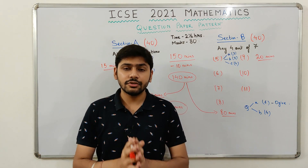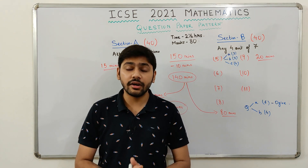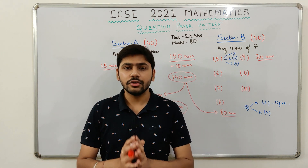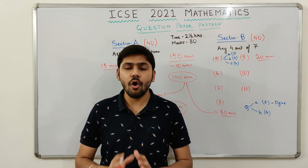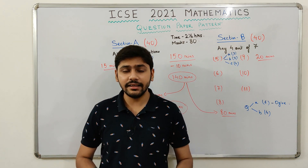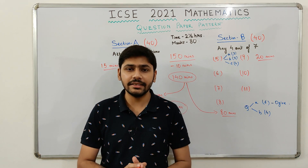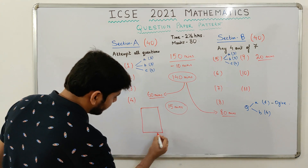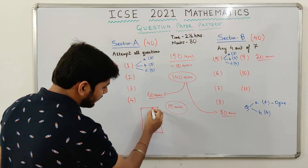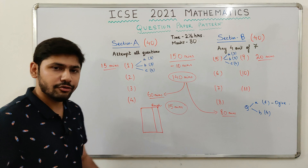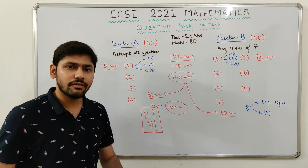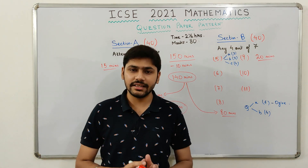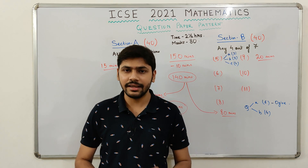The next tip: show all working steps clearly and do rough work on the same page as the sum. In ICSE Mathematics, you get step marking, so showing all working steps is compulsory. For rough work, draw a line on the right-hand margin, write 'Rough' on top, and do the rough work for each sum on the same page.